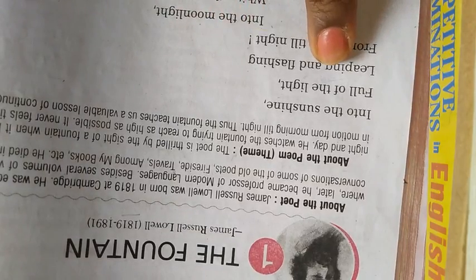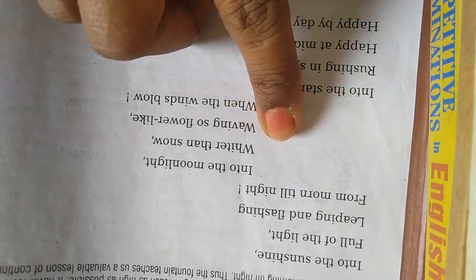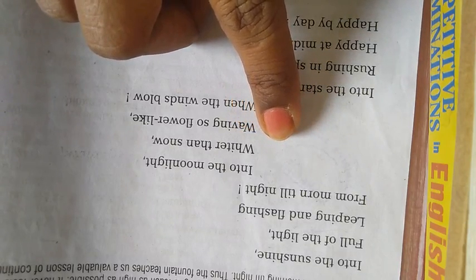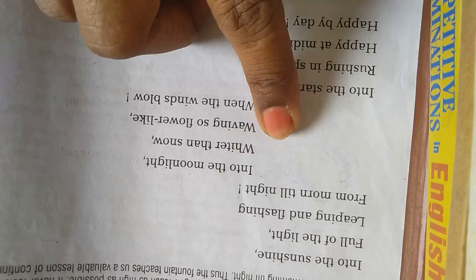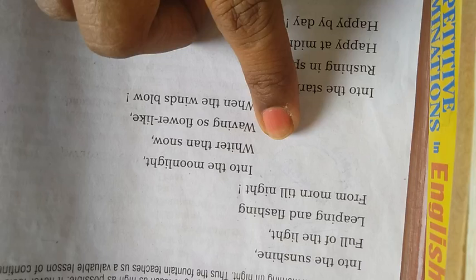Let's start the poem. 'Into the sunshine, into the sunshine full of light, leaping and flashing from morning till night.' This fountain fills with the light of the sun, leaping and flashing from morning till night. It keeps jumping, keeps shining morning to evening.